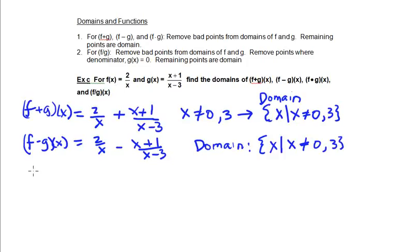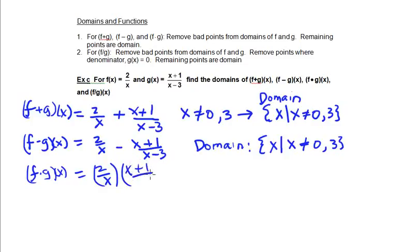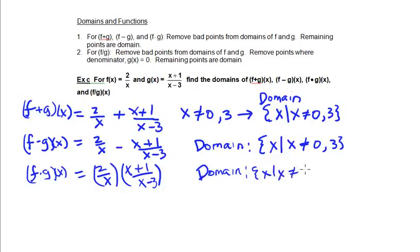The same is true for the product. When we take f times g of x we get 2 over x multiplied by x plus 1 over x minus 3. We again have the same bad points — values that give us 0 in the denominator — so similarly our domain is the set of all x such that x is not equal to 0 or positive 3.